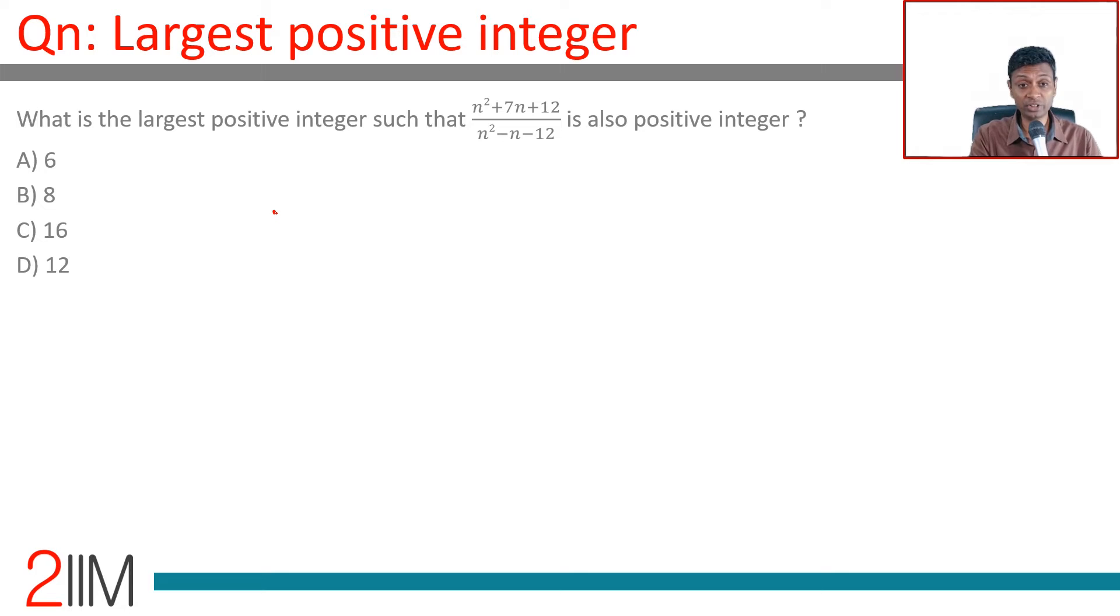What is the largest positive integer such that n square plus 7n plus 12 by n square minus n minus 12 is also a positive integer? It's a delightful question.